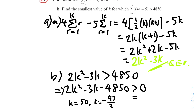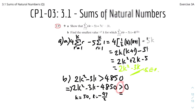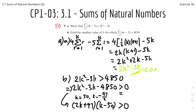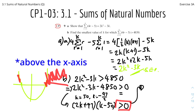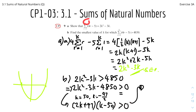Writing out the inequality: (2k + 97)(k − 50) is greater than zero. The region satisfying this is towards infinity — values above the x-axis. Since k cannot be negative, the only valid region is k greater than 50. Therefore the smallest integer value of k is k equals 51, since k must be a discrete integer value.